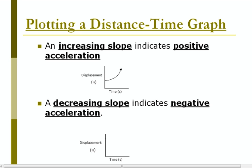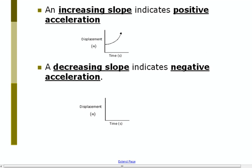An increasing slope indicates positive acceleration. A decreasing slope — which would look like this — indicates negative acceleration. Increasing slope and decreasing slope.